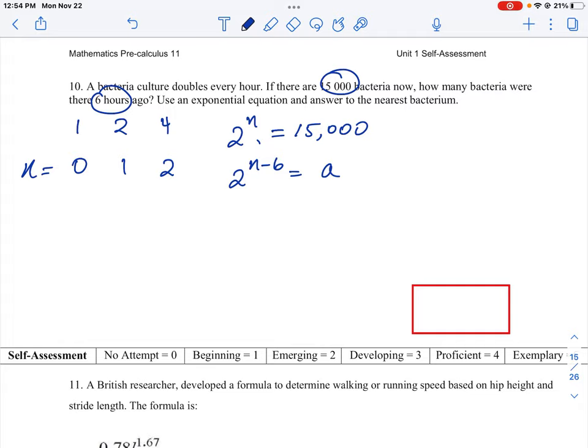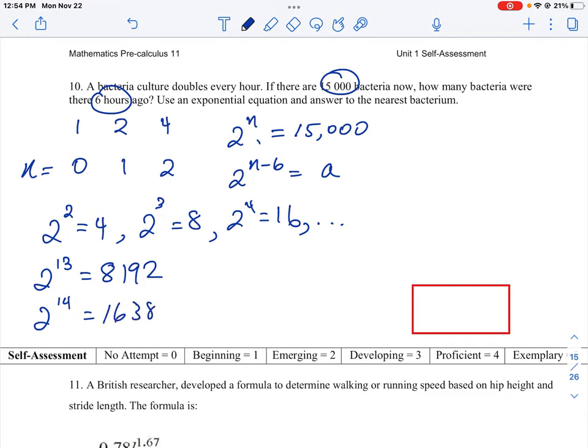So how can we figure out what number, 2 to what power would give us something close to 15,000? We would try numbers like 2 squared which we know is 4, 2 cubed which is 8, 2 to the 4 which is 16, and so on. If we go high enough, you'll find that 2 to the 13th power equals 8,192 and 2 to the 14th power is equal to 16,384.